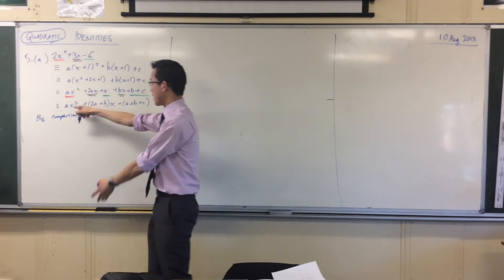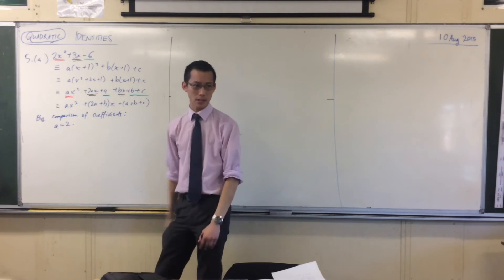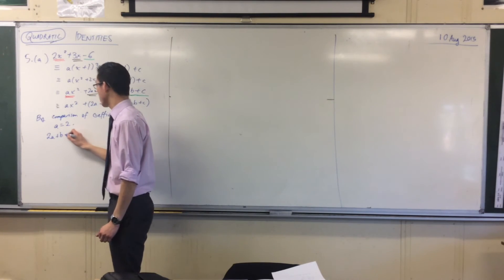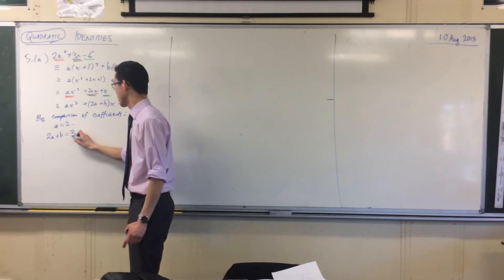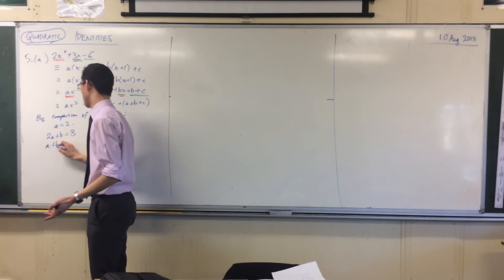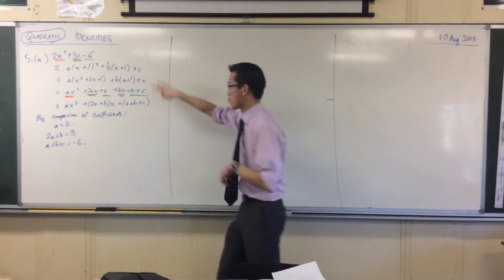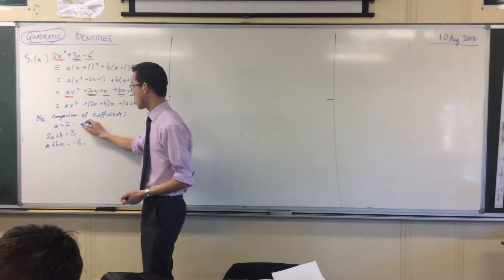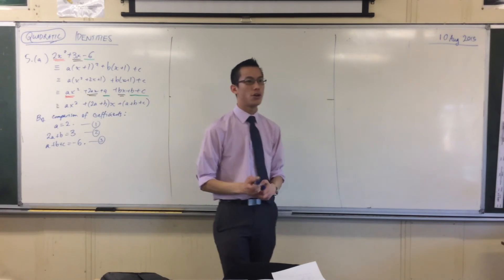I take my x² leading coefficient and I can say a = 2—it has to be, there's nowhere else it can come from. And 2a + b, that's going to equal 3. Then my constant term over here: a + b + c, watch out for the sign, that's -6. What have we done? We've transformed a problem we didn't know how to solve into three variables, three simultaneous equations.